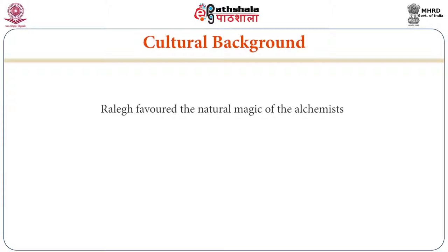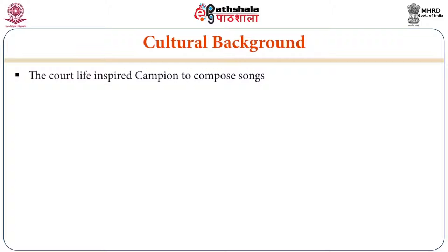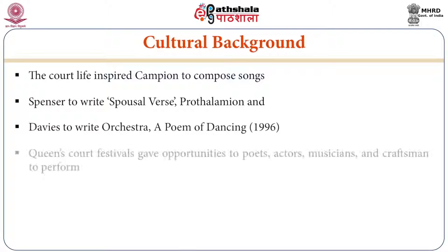New scientific theorists emerged; astrology, alchemy, magic, witchcraft, palmistry were very popular. Raleigh favoured the nature of magic and alchemy. Bacon solved the problems that were a source of tension for Raleigh. The court inspired Chapman to compose songs, Spenser to write the spousal verse Prothalamion, and Davies wrote Orchestra, a poem of dancing. The queen's court festivals gave opportunities to poets, actors, magicians, and craftsmen to perform and popularize their art.